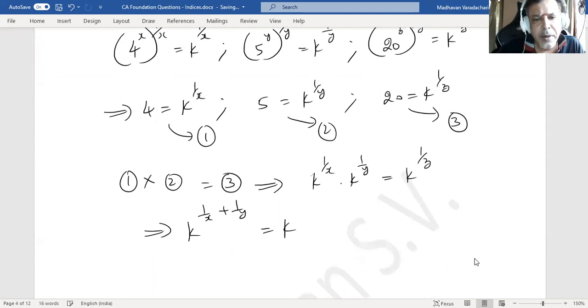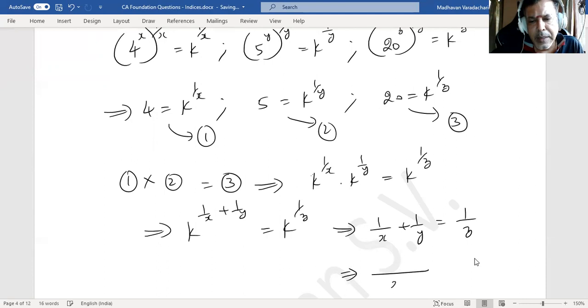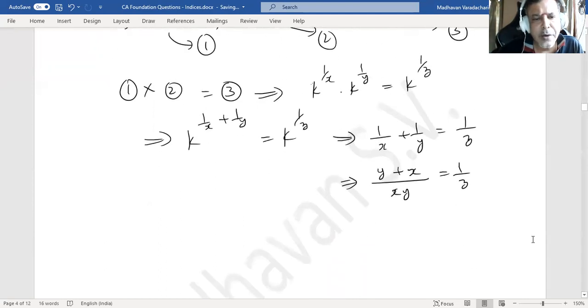So I can equate the indices now: 1 by x plus 1 by y equal to 1 by z. Taking LCM on the left side, it is xy, so you get y plus x equal to 1 by z.